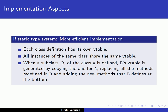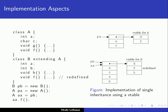When a subclass B of class A is defined, B's V-table is generated by copying the one for A, then replacing all the methods redefined in B and adding the new methods that B defines at the bottom. For example, class A has instance variables E and C and defines two functions G and F. Class B extends A, has its own instance variables A and B, and defines two functions H and F, where F is redefined.